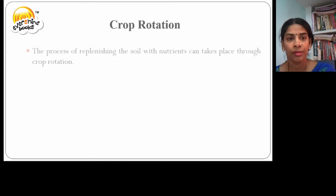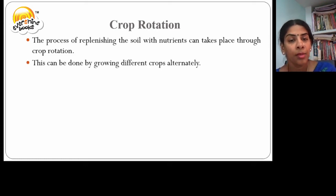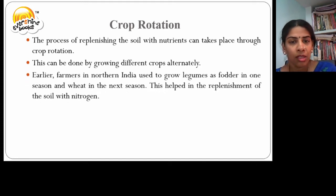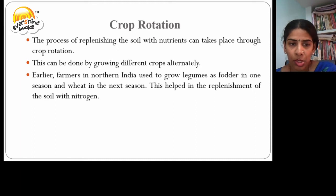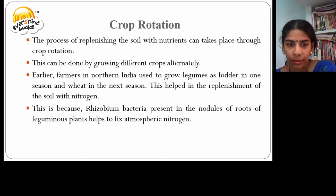Crop rotation. The process of replenishing the soil with nutrients can take place through crop rotation. This is done by growing different crops alternately. Earlier, farmers in North India used to grow legumes or fodder in one season and wheat in the next season. This helps in the replenishment of the soil with nitrogen, because the rhizobium bacteria present in the nodules of the roots of leguminous plants helps to fix the atmospheric nitrogen, which is very important for the growth of the plant.